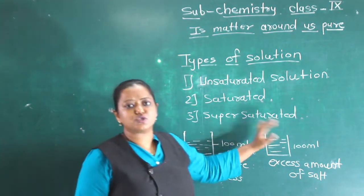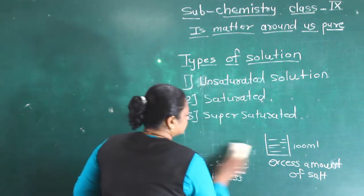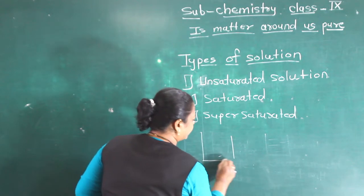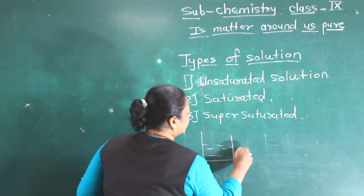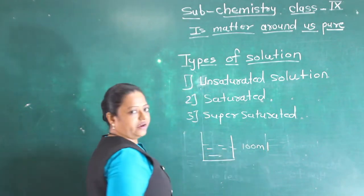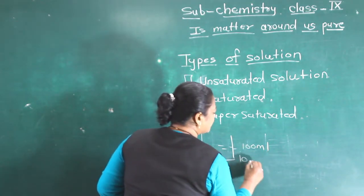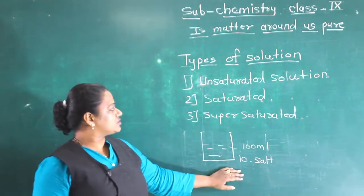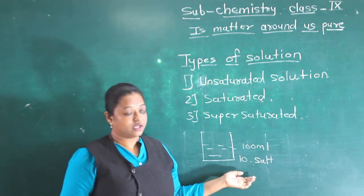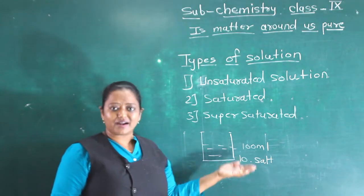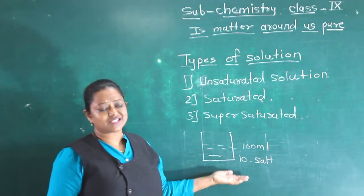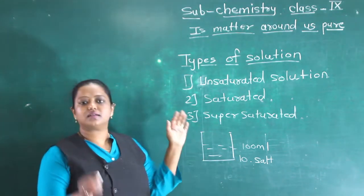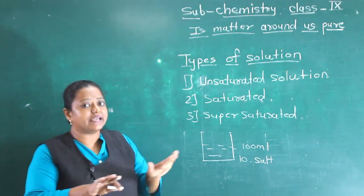I will explain about supersaturated solution. I have taken a glass tumbler containing 100 ml of water, and added 8 spoons of salt. The solution has now become saturated - the particles of salt are visible and cannot dissolve into the water because the space between the water molecules is completely occupied.